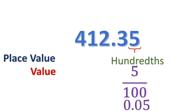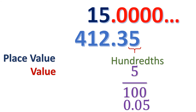Actually, whole numbers like 15 do have a decimal point, but it is imaginary — it's at the right side of the number. The digits to the right of this imaginary decimal point in whole numbers are simply zeros, which is why it's unnecessary to write them out.